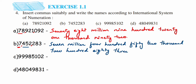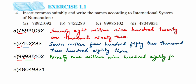For the next number, placing commas from the right: after one we get a comma, after nine we get another comma. In the millions period we have ninety-nine, so ninety-nine million. In the thousands period we have nine hundred eighty-five, so nine hundred eighty-five thousand. In the ones period we have one hundred two.